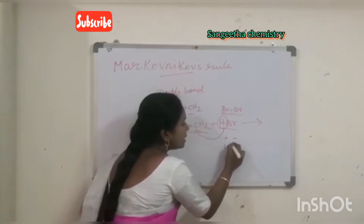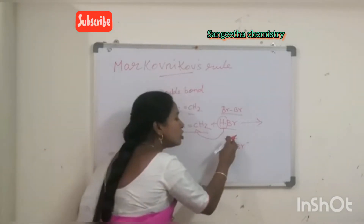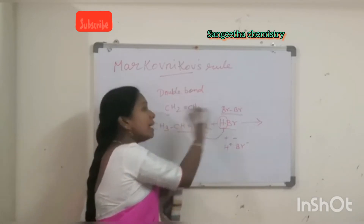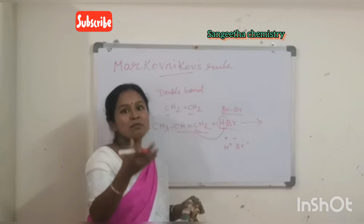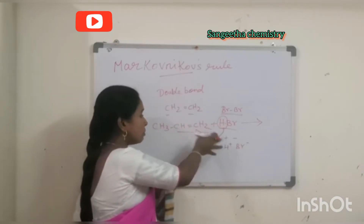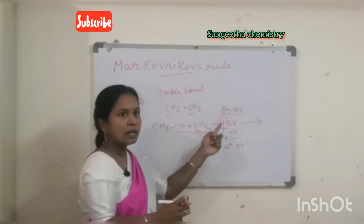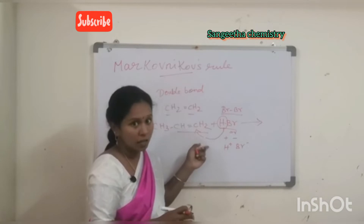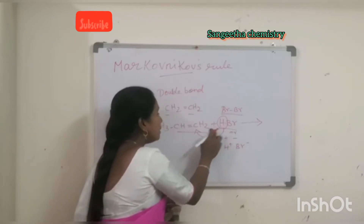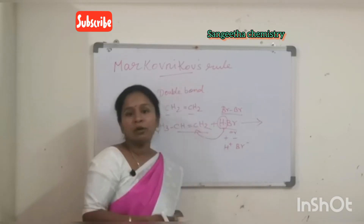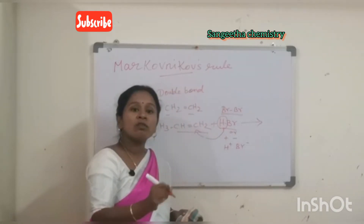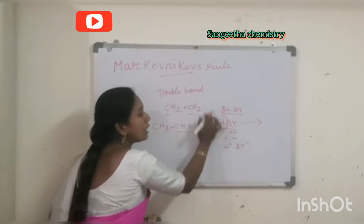The hydrogen of the reagent goes to bond with the double-bond-containing carbon which contains the highest number of hydrogen atoms. This rule is called Markovnikov's Rule. Markovnikov's Rule particularly applies to the addition reaction of an unsymmetrical alkene with an unsymmetrical reagent.